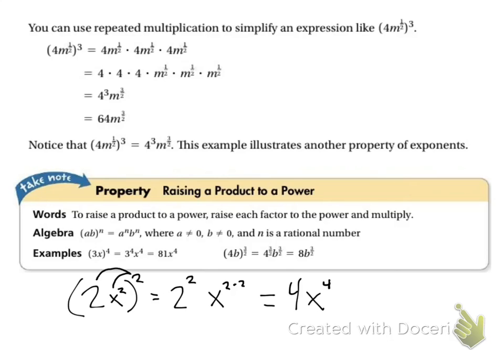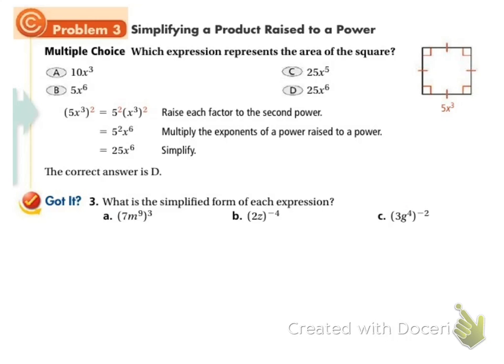Same thing works if there's multiple variables in there. So let's try a few here. Let's try this first one. So I've got seven m to the ninth to the third and I need to distribute that into both things. So seven to the third and m to the three times nine. Seven to the third, that's seven times seven times seven, which gives us 343. And this will be m to the twenty-seventh.